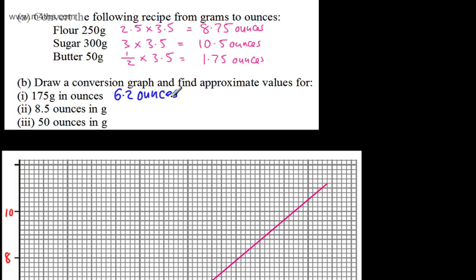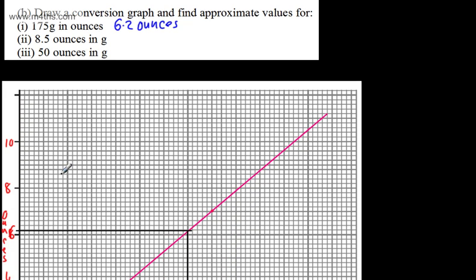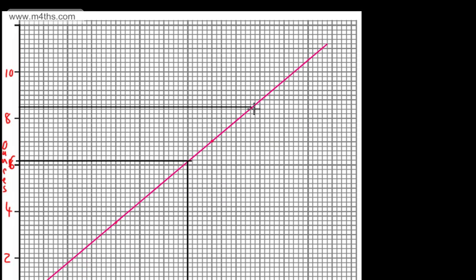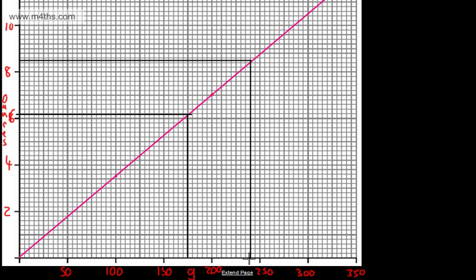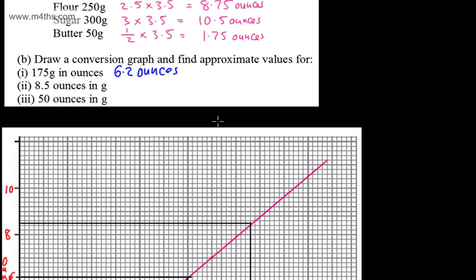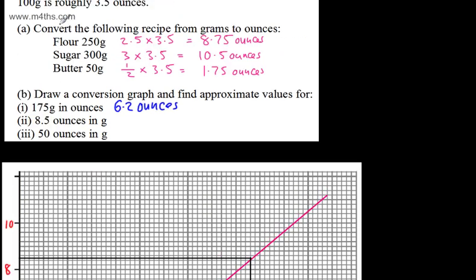Now for 8.5 ounces in grams — we've got 8 and 9 on the axis, so 8.5 is halfway between. We find that point on the line, drop a straight perpendicular line down, and that looks to be about 240 grams. Of course, if we're asked to use the graph rather than a calculator, so approximately 240 grams.